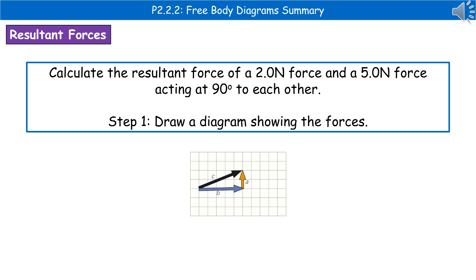The first thing we need to do is draw a diagram to show those forces. So we know that we've got a two newton force and a five newton force at 90 degrees to each other.